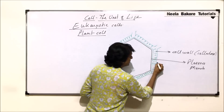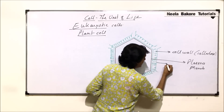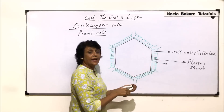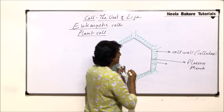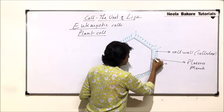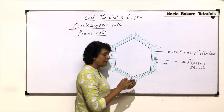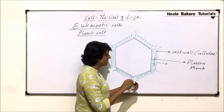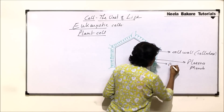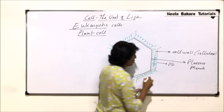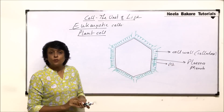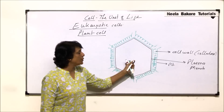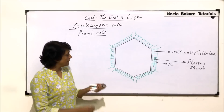At certain areas, this cellulose layer appears to be missing — but it is not missing. There is a middle lamella present, and the area drawn like this is known as a pit, through which substances can get exchanged between two cells.